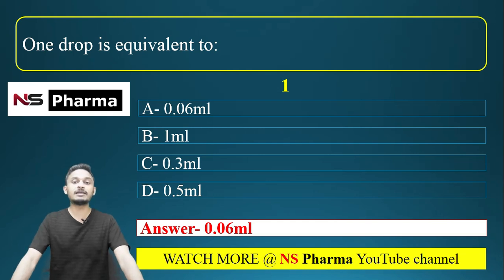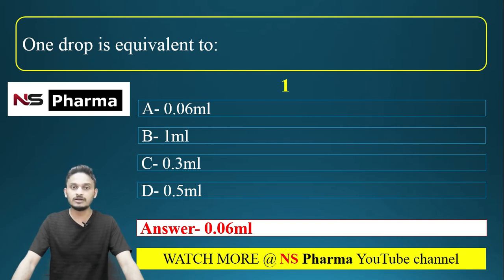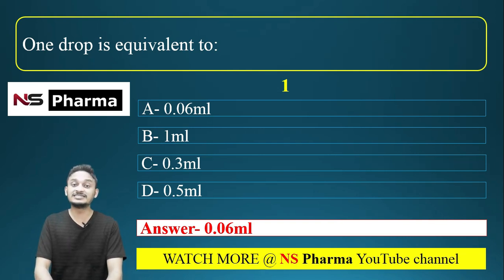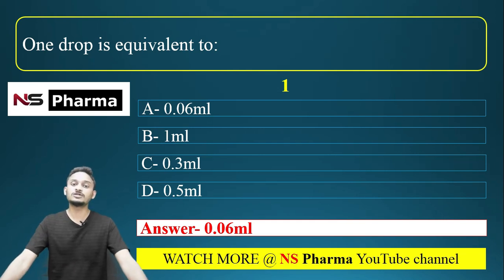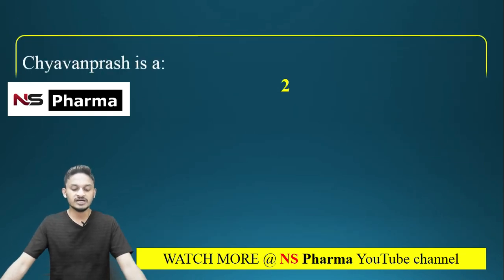For reference: one teaspoon is 5 ml, and one tablespoon is 15 ml. In one ml, there are almost 18 to 20 drops. So one drop equals 0.06 ml.